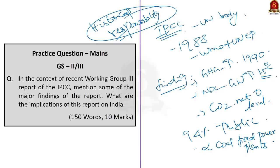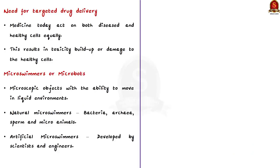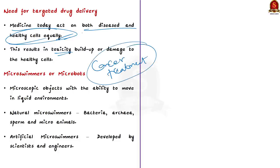Now we will move on to the next news article about microbots or microswimmers, used in drug delivery. The prominent problem with medicine today is that good drugs often distribute equally into diseased and healthy cells. When drugs accumulate in healthy cells, they often cause toxicity. For example, in cancer treatment — although the efficiency of chemotherapy and radiation therapy has increased greatly — healthy cells along with cancer cells are also affected, making cancer treatment one of the most painful journeys. This is why scientists are working on targeted drug delivery, and this is where microswimmers become important.